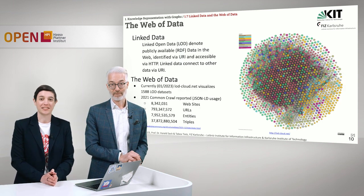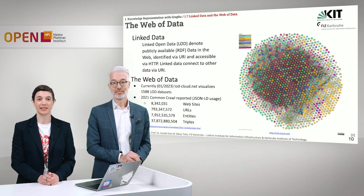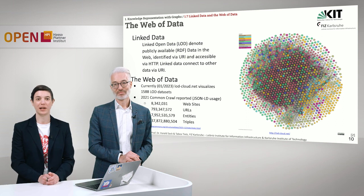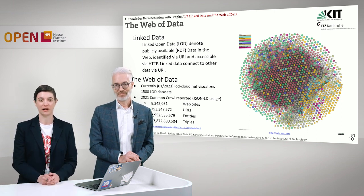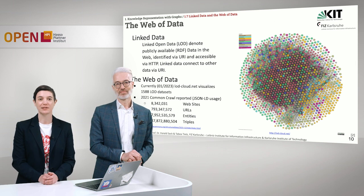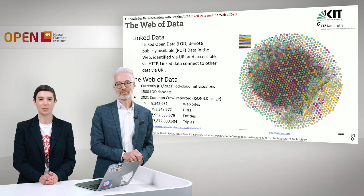Now let's take a look at the size of the web of data at the moment. On the right here, you can see the Linked Open Data Cloud from January 2023, which visualizes around 1,588 linked open datasets that are also connected to each other. In 2021, Common Crawl reported more than 8 million websites, more than 700 million URLs, more than 7 billion entities, and more than 37 billion triples.